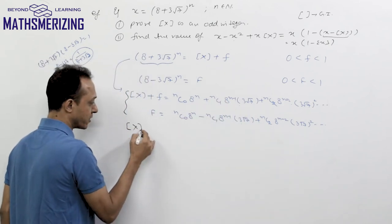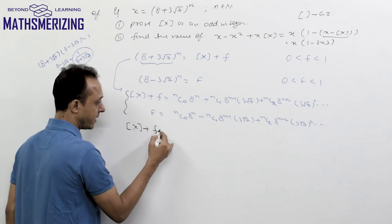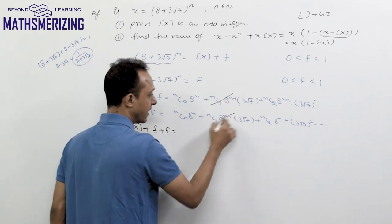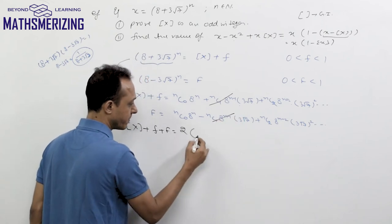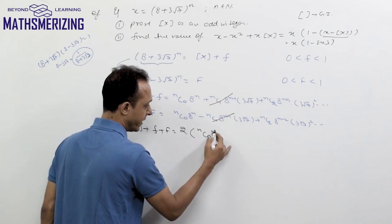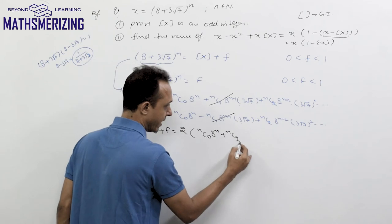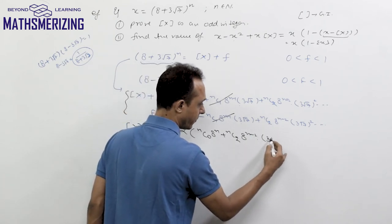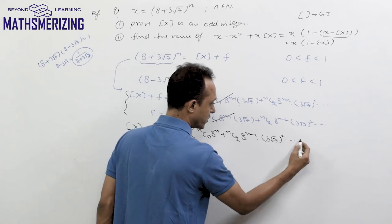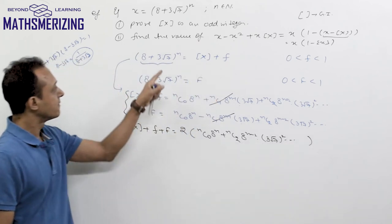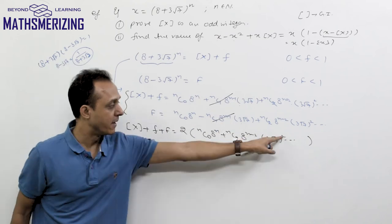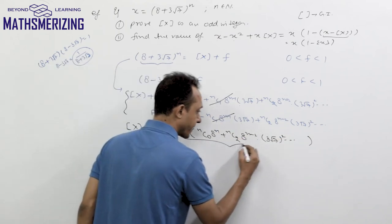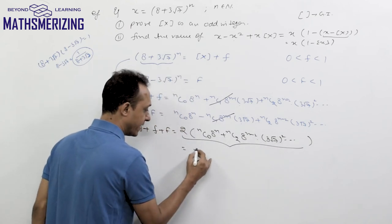Adding both series, [x] + f + F equals 2 times [C(n,0)·8^n + C(n,2)·8^(n−2)·(3√7)² + ...]. The irrational parts always appear with even powers, so the entire right-hand side is an even integer.